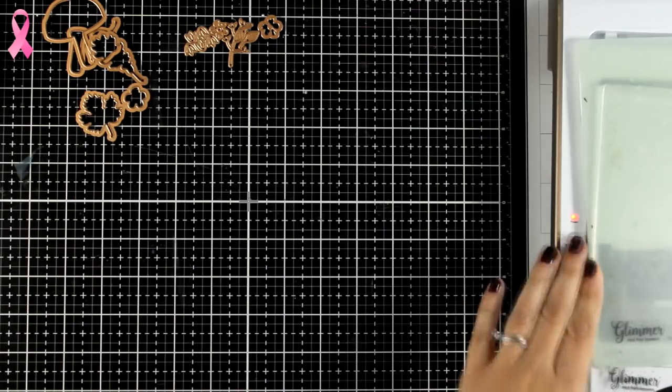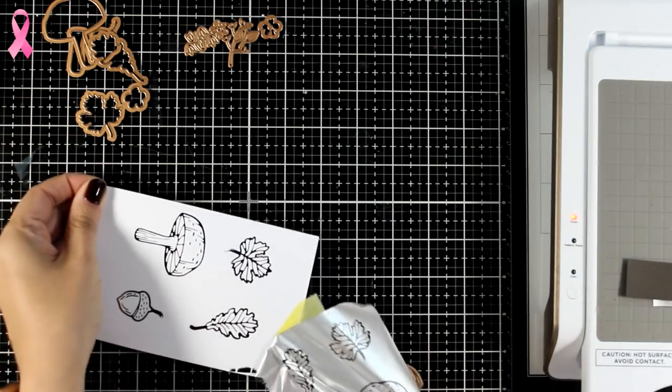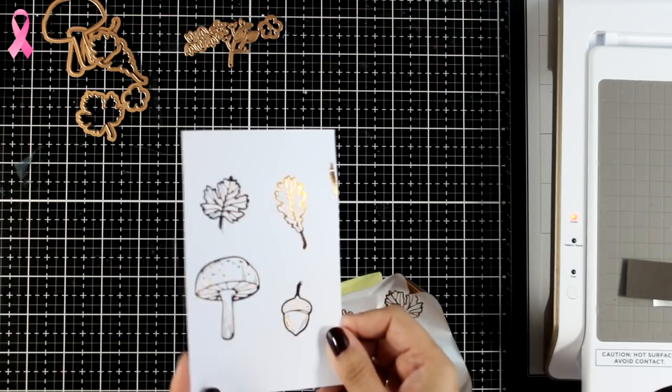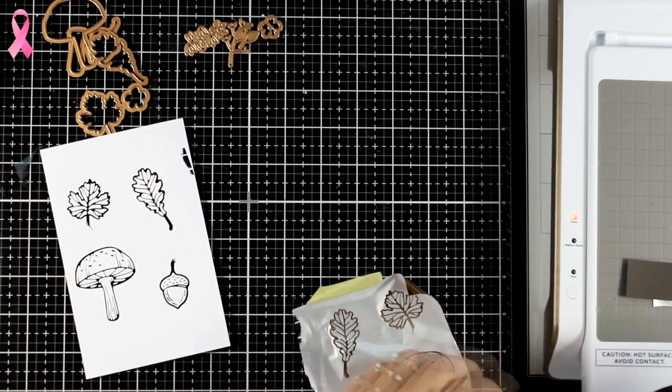I don't use a paper shim in between those seams. I see that other crafters may use it or don't. It depends really on your die cutting machine. I don't need it. I find that I get a perfect result with the sandwich as it is.